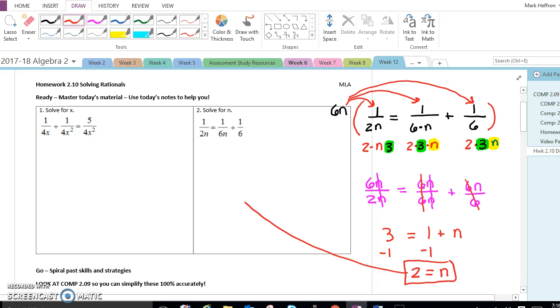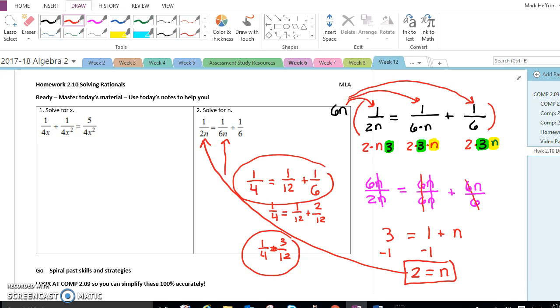Now my check would be, let's plug a 2 in everywhere and see if it all works out. As I plug that 2 in, I get 1 quarter equals 1 twelfth plus 1 sixth, which simplifies to, is 1 quarter equal to 3 twelfths? That's a true statement. 3 twelfths is a quarter. So that's our check.